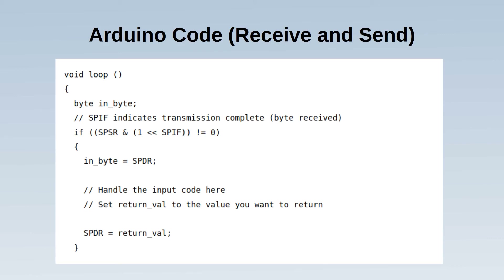The SPI status registers are checked — the if condition is met when a full byte is received. At that point the data is a byte in the SPI data register. To send data back, that same register is updated with the reply. The Arduino receives and sends data simultaneously, but because the protocol works by responding to a request from the Raspberry Pi, as long as the response is included before the next byte is received, it can be treated as if sent one at a time.